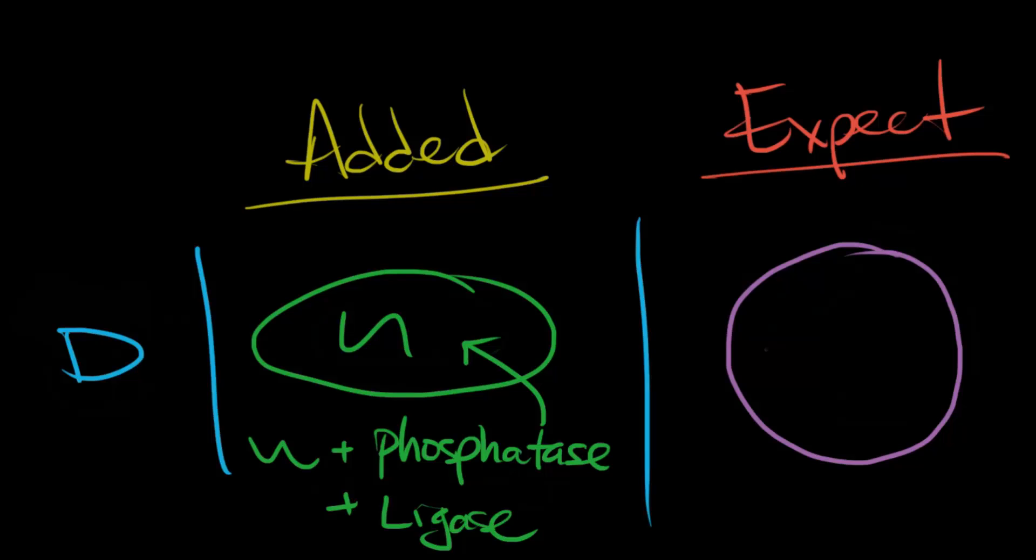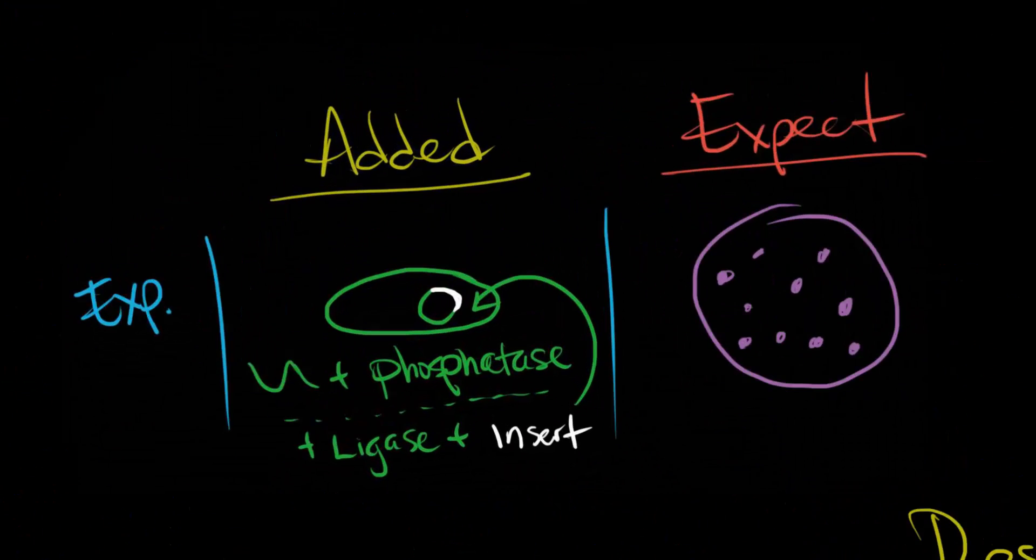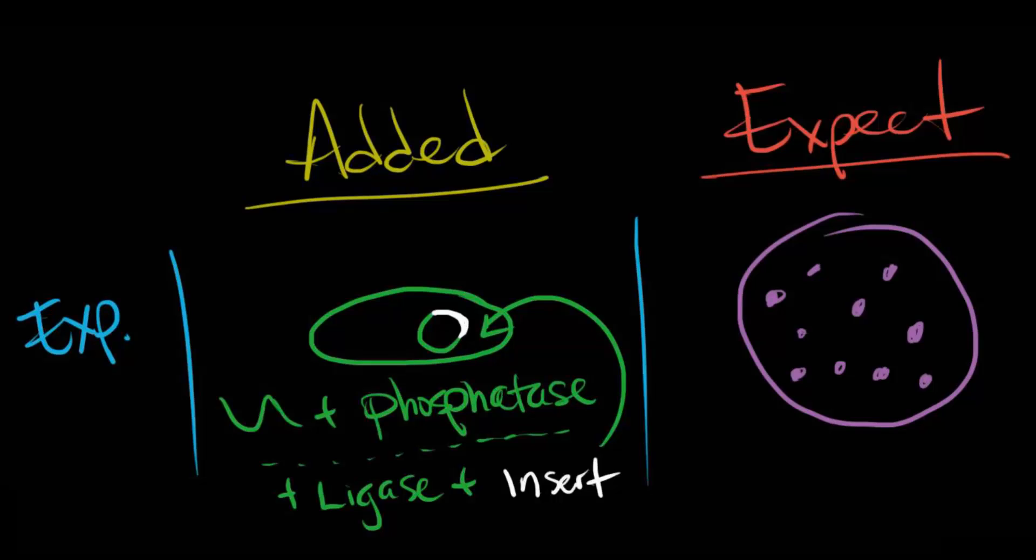While simultaneously doing all of these controls, we're also doing our own experiment, which is identical to control D, but this time we add in the insert at the end during the incubation with ligase. We'd expect, and hope, that there will be some growth, albeit not very much. Okay, before you go on to the video, please make sure you understand each of those controls. Now, know what each control's purpose was, as well as what we expected to see. If you need a second, pause the video now.